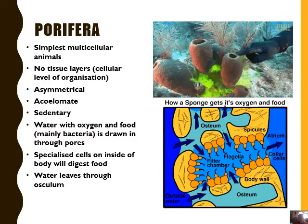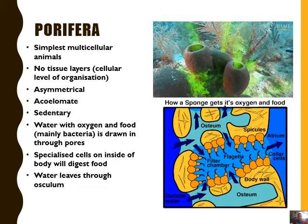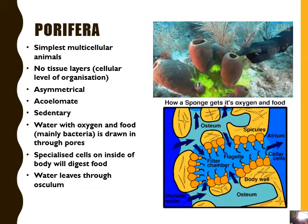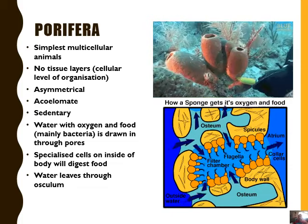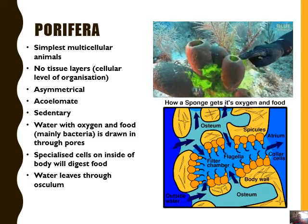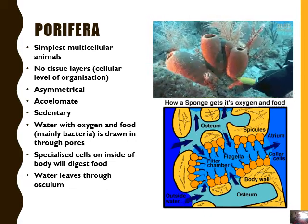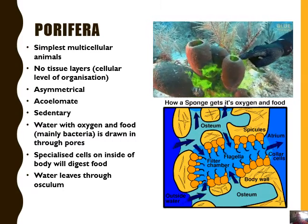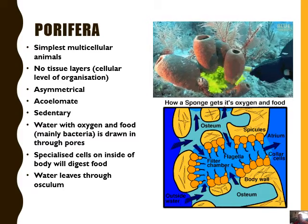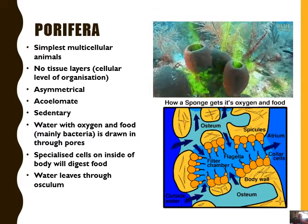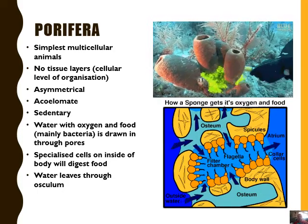Porifera are the simplest multicellular animals. They have no tissue layers because they're at the cellular organization level — not diploblastic or triploblastic, just a single layer of cells. They are asymmetrical, acoelomate, and sedentary, meaning they do not move at all. Water with oxygen and food — mainly bacteria — is drawn in through the pores, and the water leaves through the osculum.